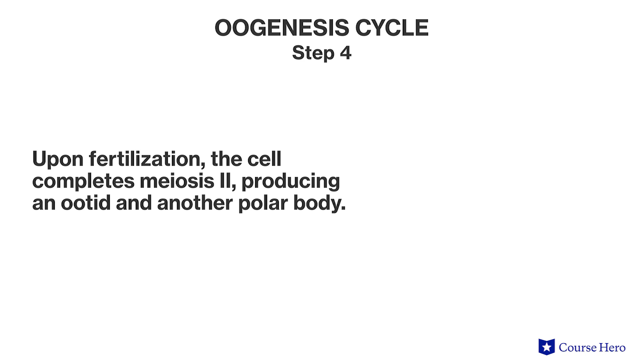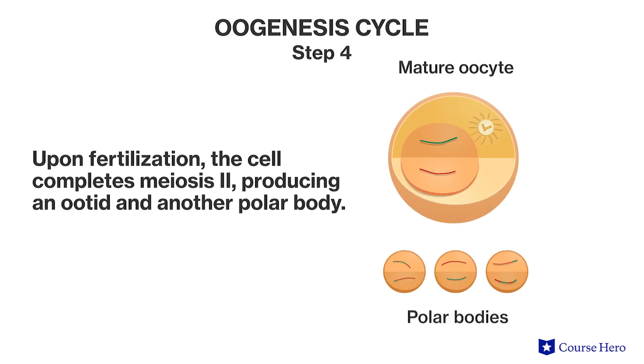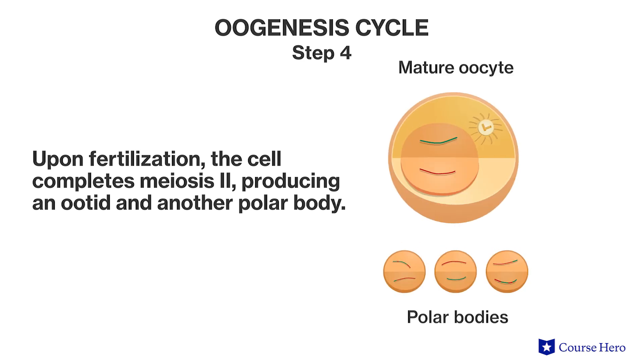Step four: upon fertilization, the cell completes meiosis II, producing an ootid — a fertilized egg cell — and another polar body. So unlike males, who carry out gametogenesis continuously and are fertile throughout life, human females produce gametes in cycles. After about 500 cycles, they stop producing gametes and are no longer fertile.